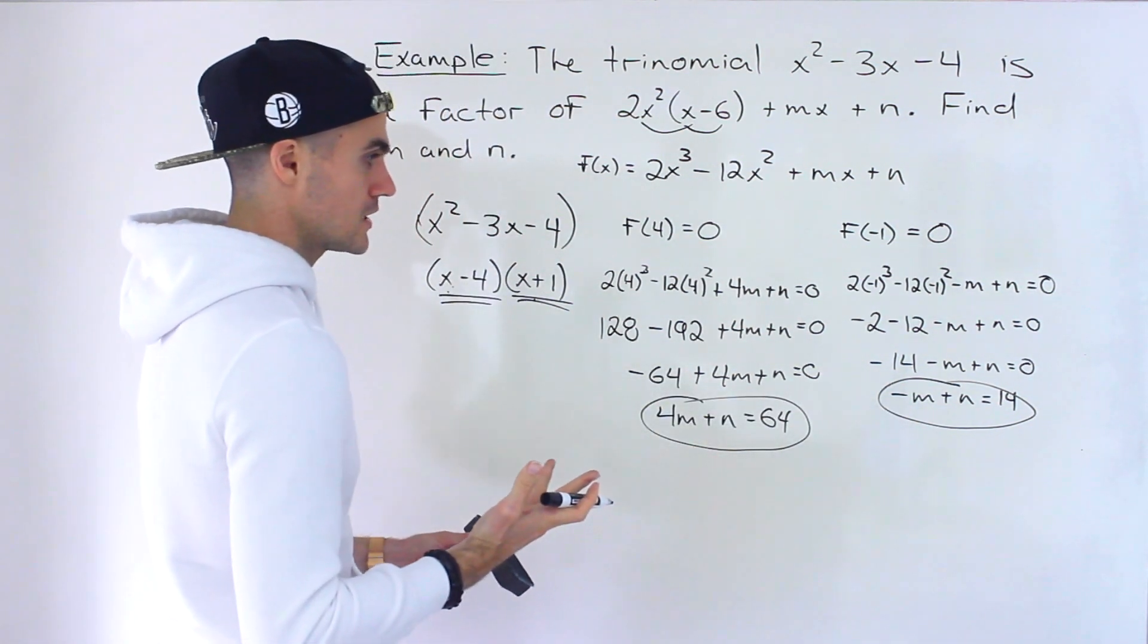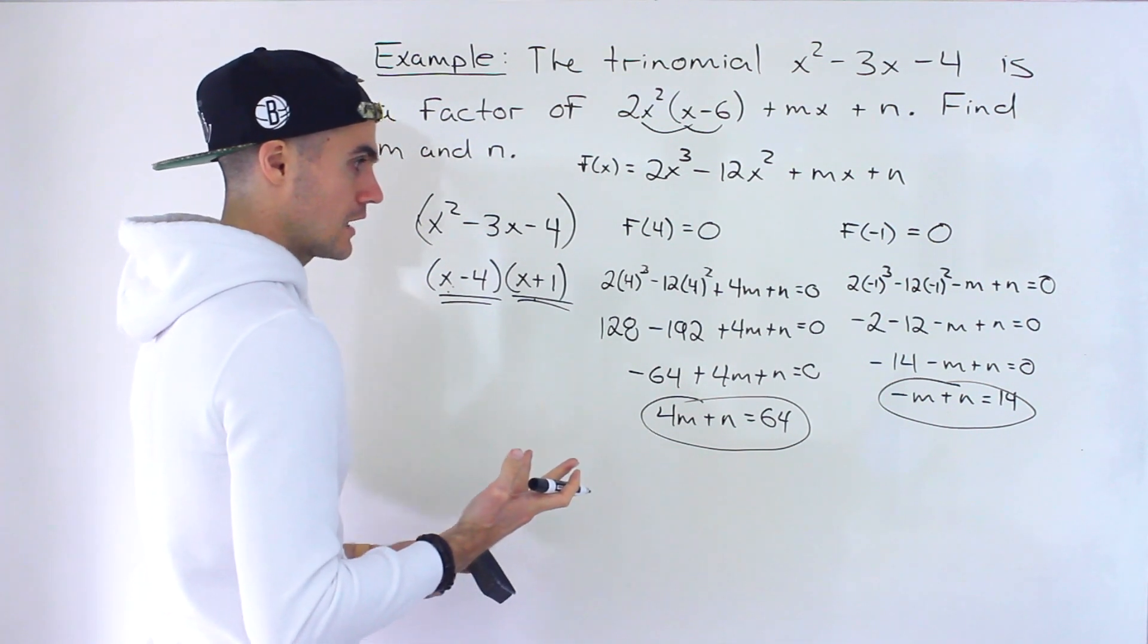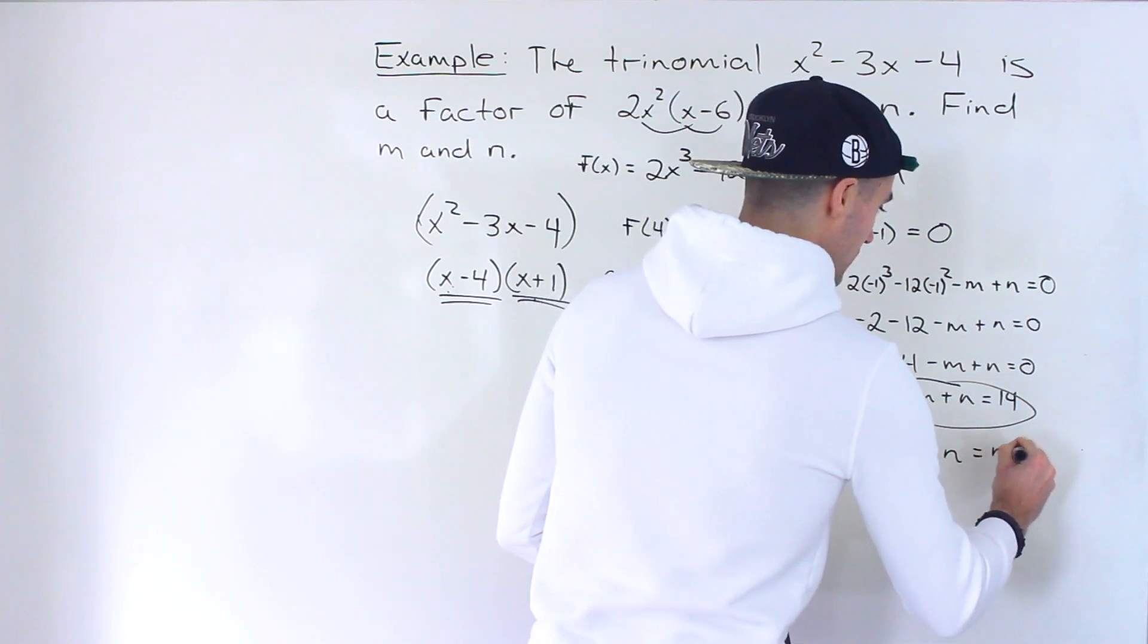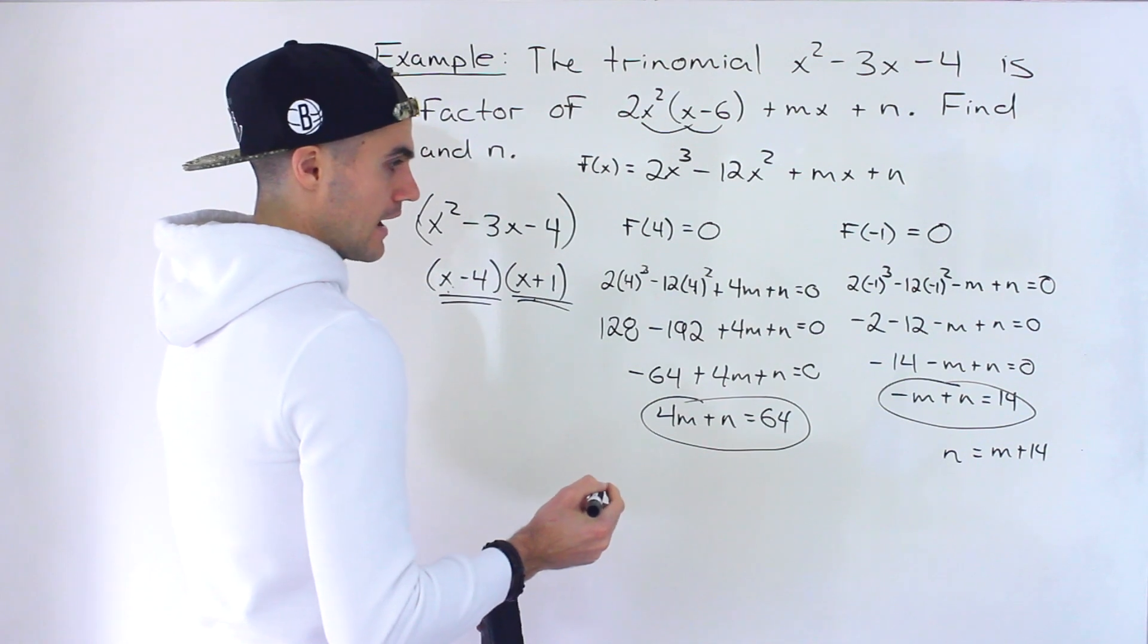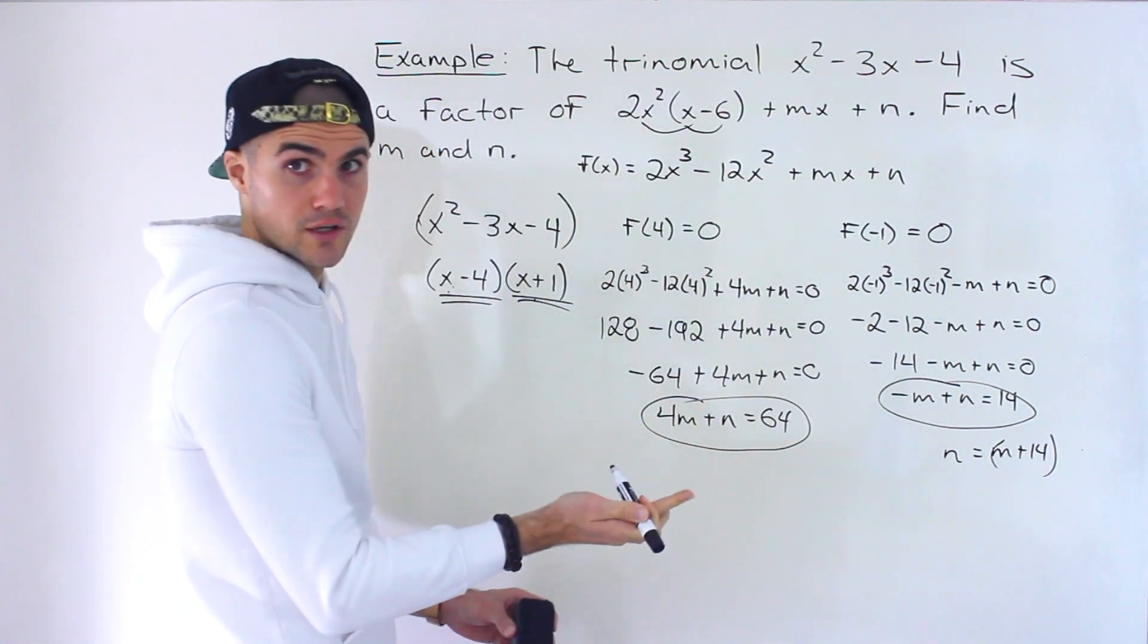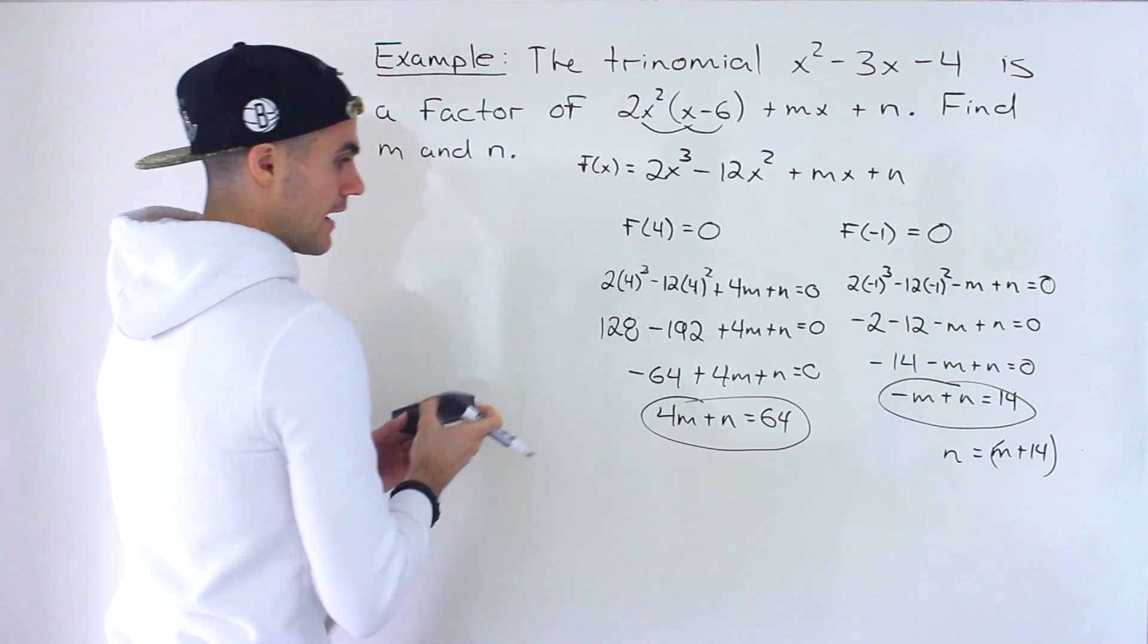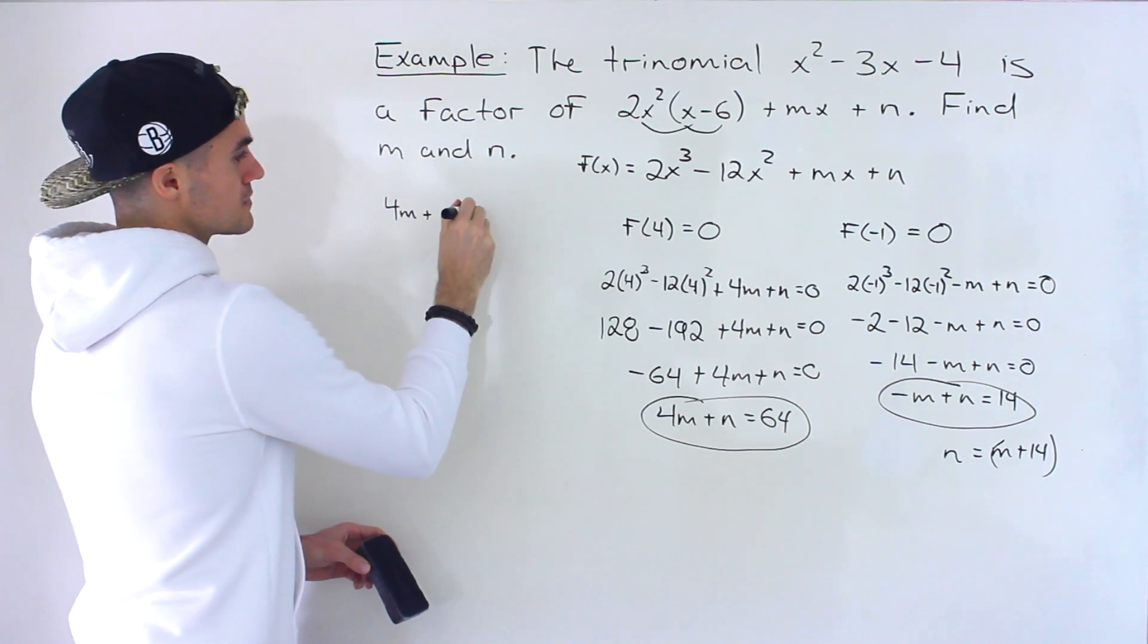I'm going to isolate for this n value. So n would equal m plus 14 like that. And then this m plus 14 I'll plug in over here for that n value. So we would end up having 4m plus m plus 14 equals 64.